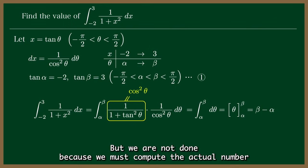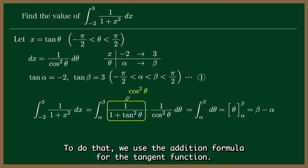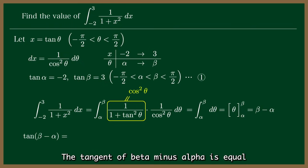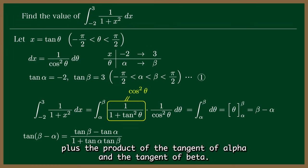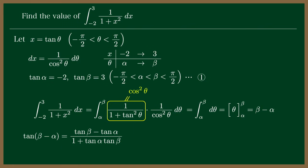But we are not done, because we must compute the actual number beta minus alpha. To do that, we use the addition formula for the tangent function. The tangent of beta minus alpha is equal to the tangent of beta minus the tangent of alpha divided by 1 plus the product of the tangent of alpha and the tangent of beta.